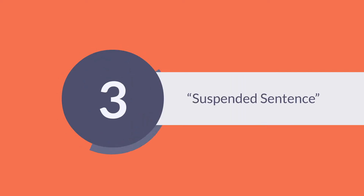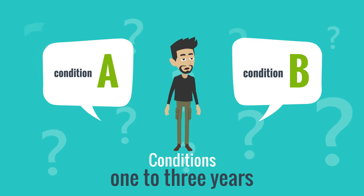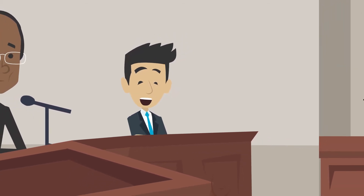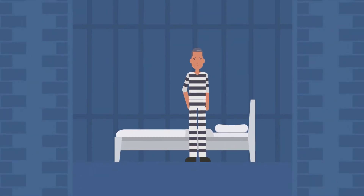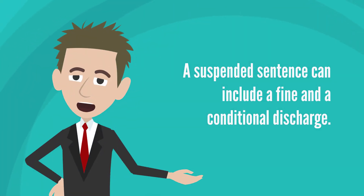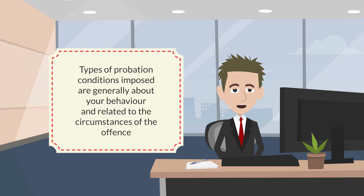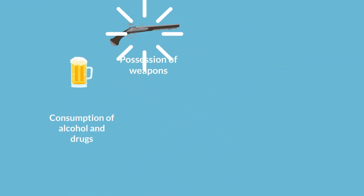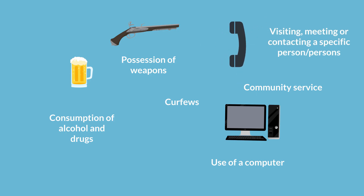The third type of punishment is called a suspended sentence. It is similar to a conditional discharge in that conditions are imposed through a probation order for one to three years. The difference is that a conviction will be on your record and you would have to apply for a pardon to have it removed. The court is basically delaying a sentence of up to two years in prison while you are supervised by a probation officer. Probation conditions generally relate to behavior and circumstances of the offense, such as consumption of alcohol and drugs, possession of weapons, curfews, use of a computer, community service, and contact with specific persons.